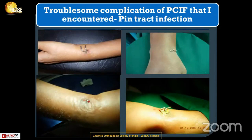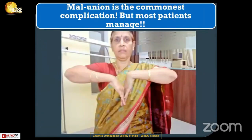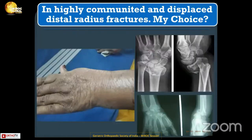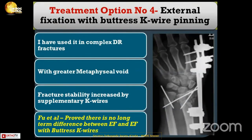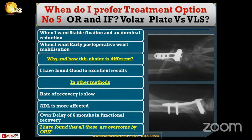Complications I have encountered in percutaneous fixation include pin-tract infection, pin migration in a few cases, and malunion. However, most patients accept the malunion and it is not a big issue in senior citizens — they are okay with these results if it helps them avoid volar locking systems. For more complex, displaced fractures, I prefer external fixation. It is the method of choice in highly unstable and severely comminuted fractures — simple, rapid, and relies on ligamentotaxis. I prefer bridging over non-bridging, with better radial length restored after one year. I have also used buttress K-wire pinning in complex distal radius fractures with greater metaphyseal void, and there is no long-term difference between external fixation and external fixation supplemented with buttress K-wires.